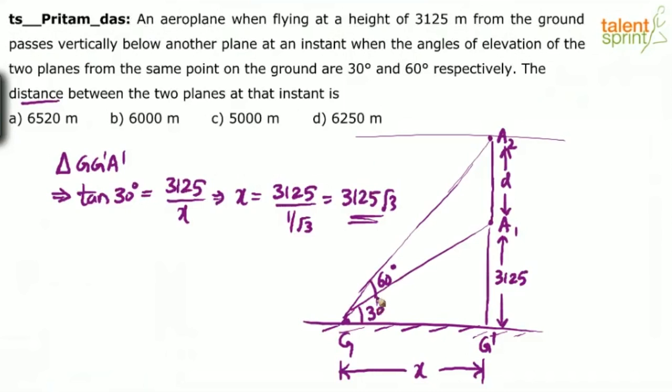And this is overall 60 degrees. Now if you look at triangle G' A2, this is A1 sorry. What do we get? Tan 60 degrees equals opposite side, which is 3125 plus D, by adjacent side, which is X. And X we have already calculated. X comes out to be 3125 by root 3. You can substitute it here.